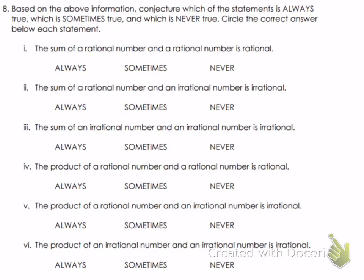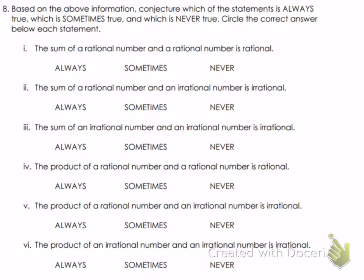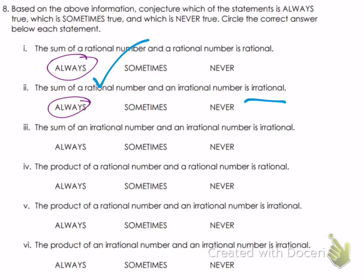Now let's talk about rational and irrational numbers. A rational number includes all fractions and whole numbers. Irrational numbers are square roots of numbers that are not perfect squares, like √11 or √43. The sum of a rational plus a rational is always rational. The sum of a rational plus an irrational is always irrational — any time you add an irrational number, the result is irrational.